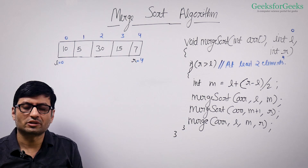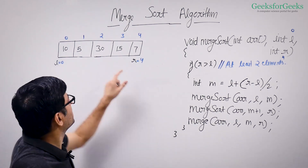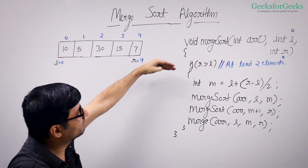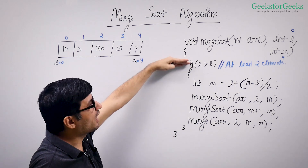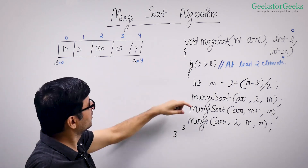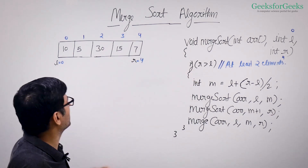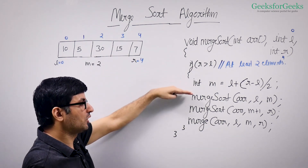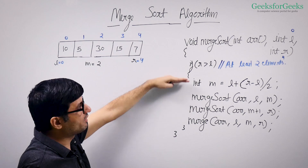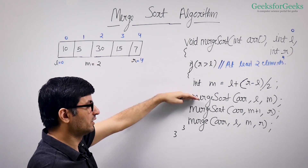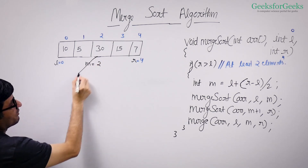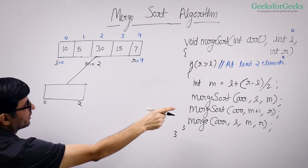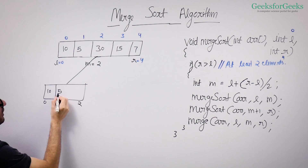Let us now do a dry run of this algorithm. Let us take this input array. We have L=0 and R=4, so our function begins its execution. R is greater than L (R is 4, L is 0), so we come inside. When we come inside, we find the middle point, which is 2. Now our main function called from 0 to 4 makes a recursive call for 0 to 2 (low to M), covering elements 10, 5, 30.